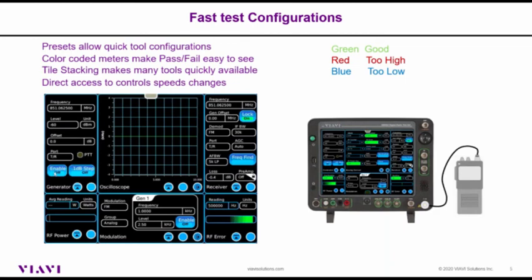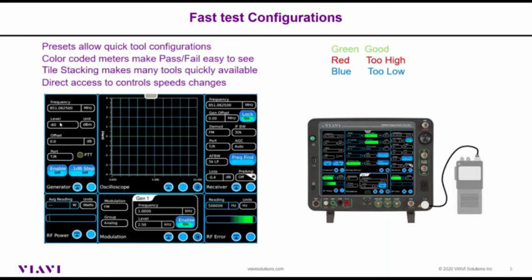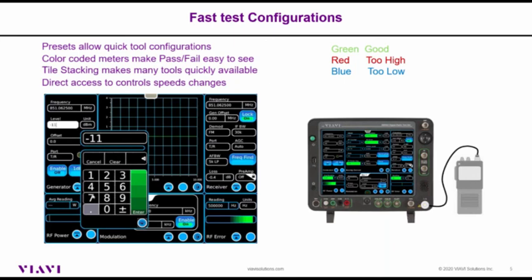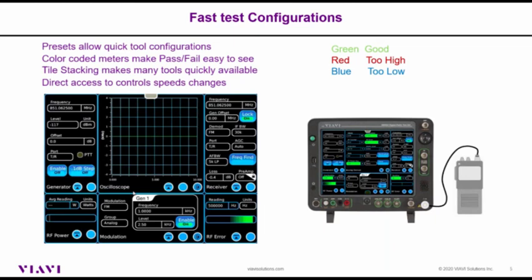Here we'll turn on the generator and the modulator. There are no levels of menus to go through to define the control changes — it's just right there. There's a numeric entry where I can change the generator level and hit enter. There are also graphical tools like slider bars to change things like level and frequency.